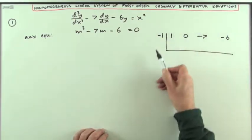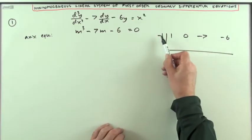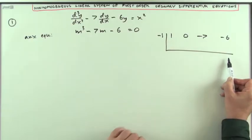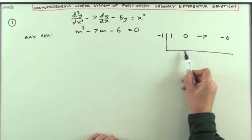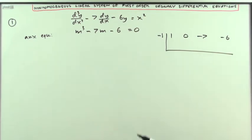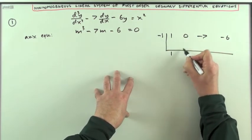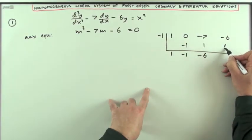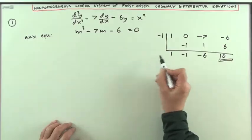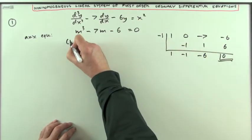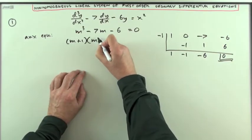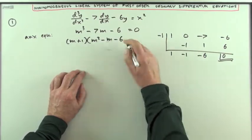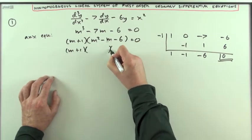So if I feed negative 1 through this synthetic table — which works both ways, it evaluates the expression at negative 1, but also gives the quotient in these numbers upon division by the factor which produces that root — bring the 1 down, multiply up by negative 1, add down, multiply up 1, add down, multiply up 6, and there's the 0. On dividing by the factor m plus 1, the quotient is m squared minus m minus 6 equals 0.